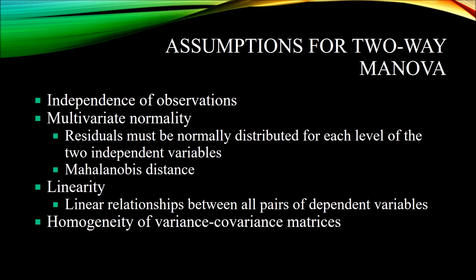The assumption of linearity means there are linear relationships between all pairs of dependent variables for each combination of levels of the two independent variables, which can be tested using a scatter plot. The final assumption is homogeneity of variance-covariance matrices, often tested using Box's M test. In summary, the assumptions for two-way MANOVA are: independence of observations, multivariate normality, linearity, and homogeneity of variance-covariance matrices. Thanks for watching.